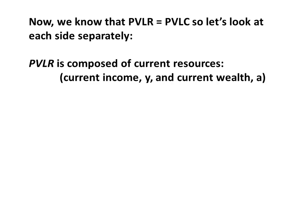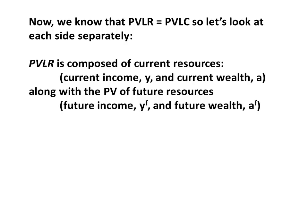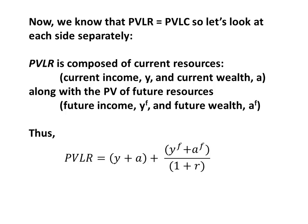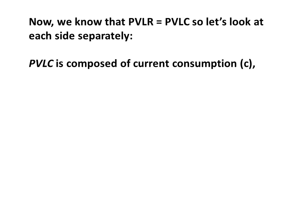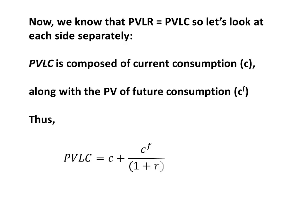We know that PVLR is going to equal PVLC because we're not leaving anything left over after the second period. Let's look at each side of this equation separately. The present value of lifetime resources is composed of current resources — Y and A — along with the present value of our future resources, YF and AF. Thus, our PVLR is going to be our current income and current wealth, plus a discounted value — depending on the interest rate — of our future resources YF and AF. These are our current resources, these are our future resources, and this term is discounting those future resources.